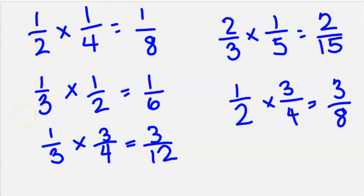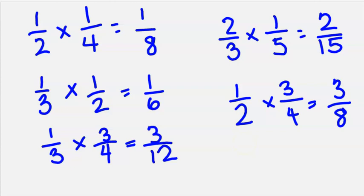I wonder if that's the same pattern in the denominator. Let's take a moment to look. Two times four equals eight — well, that's true. Three times two equals six. Three times four equals twelve. Three times five equals fifteen. Two times four equals eight. That seems to be happening every time. That's definitely a pattern!